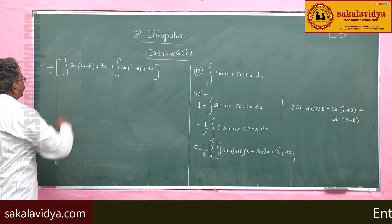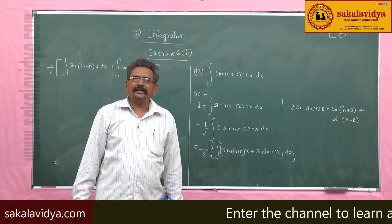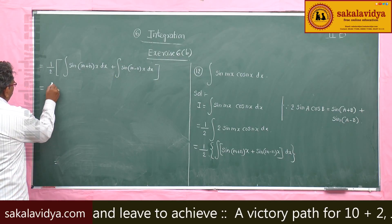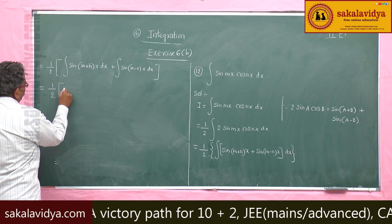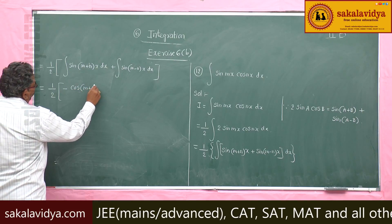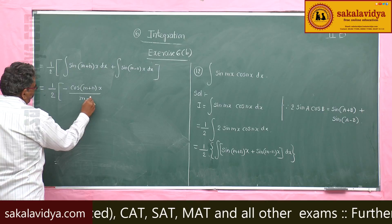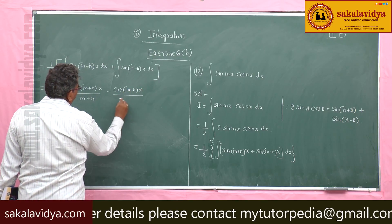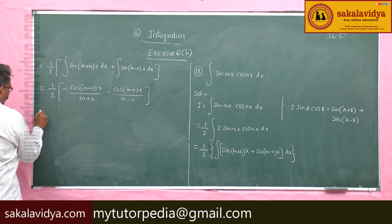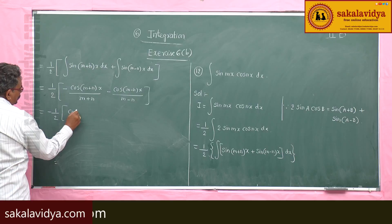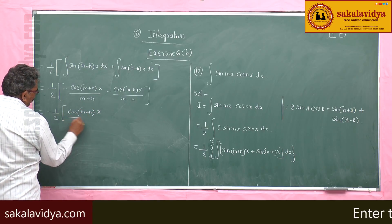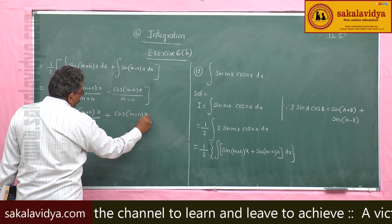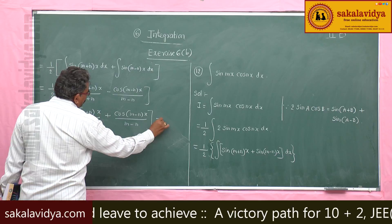The integral of sin(m+n)x dx equals minus cos(m+n)x divided by (m+n). So we write (1/2) times minus cos(m+n)x over (m+n) minus cos(m-n)x over (m-n). Taking minus common, this gives minus (1/2) times [cos(m+n)x over (m+n) plus cos(m-n)x over (m-n)] plus constant of integration.